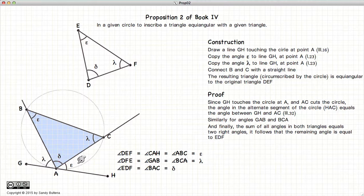And there we have two triangles with both having the angles epsilon, delta, and lambda. So we have successfully drawn a new triangle inside our circle that is equiangular to the original.